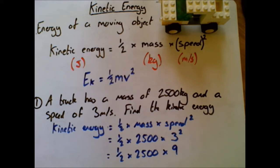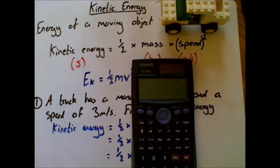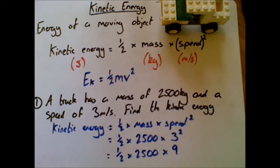So this is half times 2500 times three squared is nine. Now you can then just put this into the calculator. On your calculator you would literally type in 0.5 times 2500 times nine, and that gives us an answer: it gives us 11,250 joules.